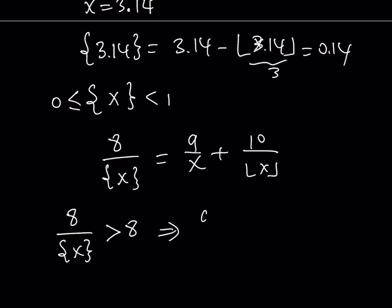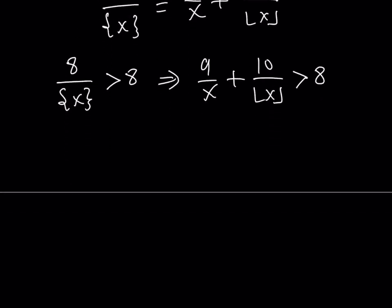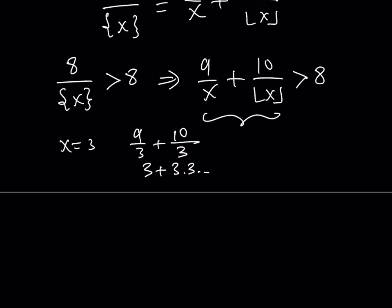This implies the right-hand side is also greater than 8. If x equals 3, we get 9 divided by 3 plus 10 divided by 3, which is 3 plus 3.3 repeating — the sum is not greater than 8. And for any x greater than or equal to 3, the right-hand side only gets smaller, so it's never greater than 8. Therefore, for x greater than or equal to 3, there are no solutions.